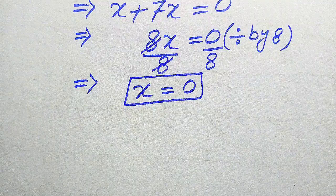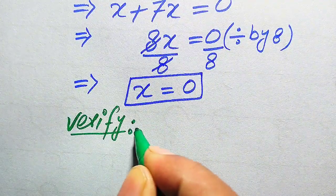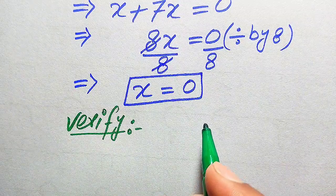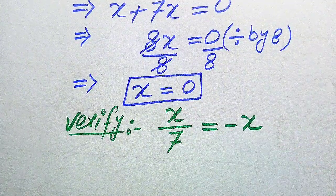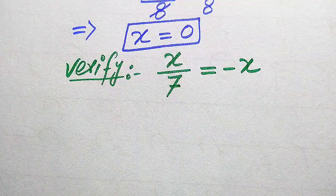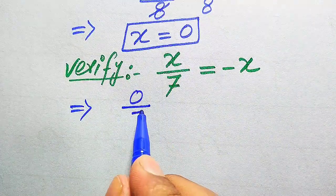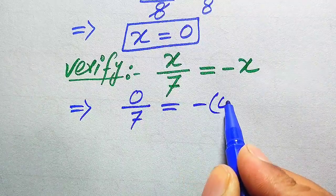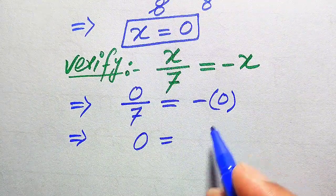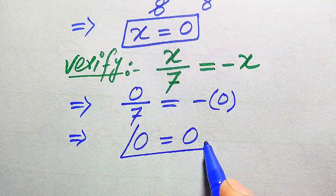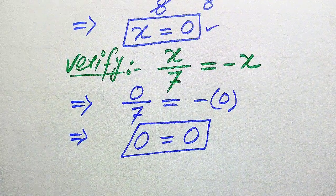We need to verify whether x equals 0 satisfies the given equation or is an extraneous root. Substituting into the original equation x over 7 equals minus x: we get 0 divided by 7 equals minus times 0. Since 0 divided by 7 is 0, and minus times 0 is 0, both sides are equal. This confirms that x equals 0 satisfies the given equation.